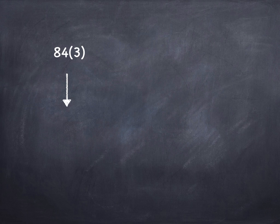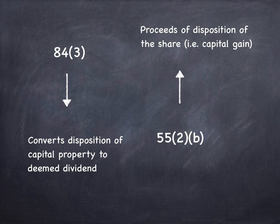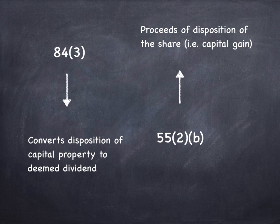Look at it this way: 84.3 converts a disposition of capital property to a deemed dividend. 55.2(b) does the opposite — it takes the proceeds of disposition of the share, the deemed dividend, and converts it into a capital gain. That's why it's called a round trip, so to speak. Why is that necessary? Because 84.3 applies to situations where you own the shares yourself and you're the one who would get the capital gain they want to convert into a deemed dividend. They don't want to convert the HoldCo/OpCo into a deemed dividend because dividends travel tax-free. So we have to convert that back into a capital gain. It's kind of a crazy system, but that's how it works.